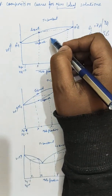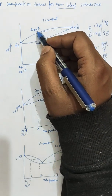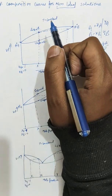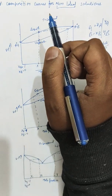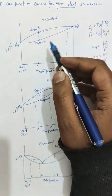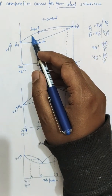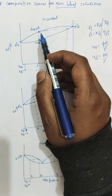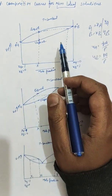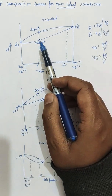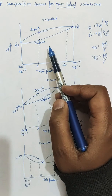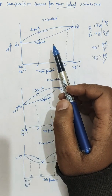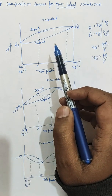The upper dark line shows the variation of vapor pressure with the composition of the liquid mixture, whereas the lower line shows the change in the composition of the vapor with the composition of the liquid mixture. These figures show typical shapes of the three types of vapor pressure composition curves for non-ideal solutions.